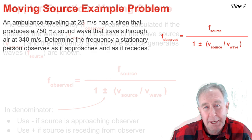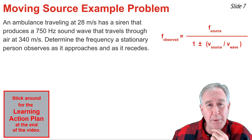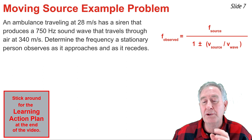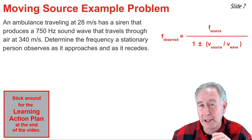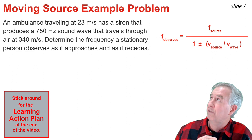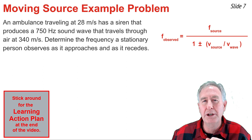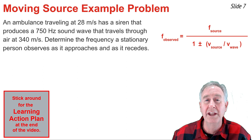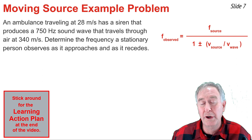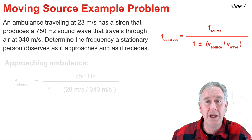We're going to use this equation to solve a problem about an ambulance moving down the highway at 28 meters per second with its siren on, producing 750 hertz sound waves. Those sound waves travel through air at 340 meters per second, and we want to determine the frequency observed as the ambulance is approaching and as it recedes from the observer. The 28 m/s is V of the source in the denominator, and 340 m/s is V wave. The frequency of the source is 750 hertz. First, we calculate the frequency observed as the ambulance is approaching the observer.